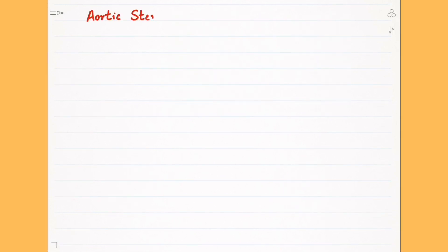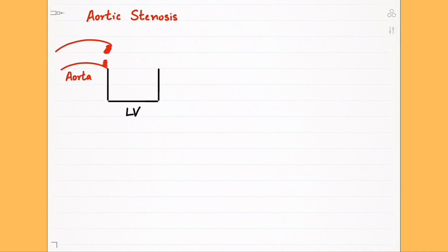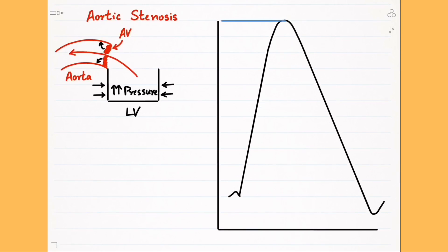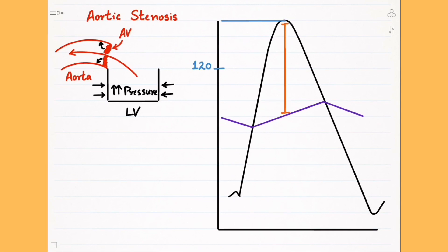Let's talk about aortic stenosis first and how it changes the pressure-time curve. We have a stenosed or stiff aortic valve, so the left ventricle has to contract forcefully to generate enough pressure to try to open the stenosed valve and pump blood into the aorta. Because of this high pressure, the ventricular pressure curve is much higher than the normal 120 millimeters of mercury. The left ventricle still can't pump out much blood or transmit its pressure into the aorta because of the stenosed valve, resulting in the aortic pressure curve being much lower, with a huge gap between the left ventricular and aortic pressure curves.